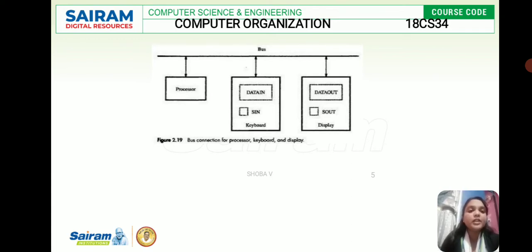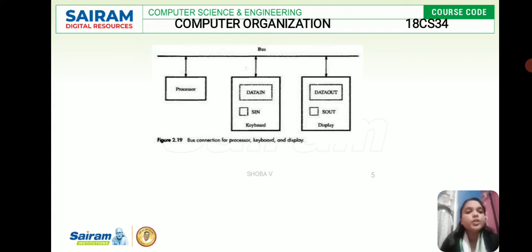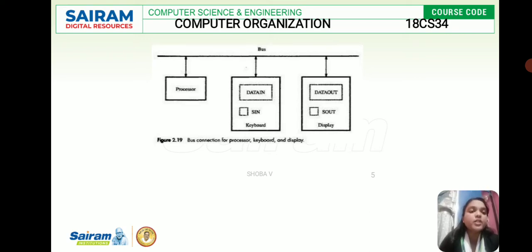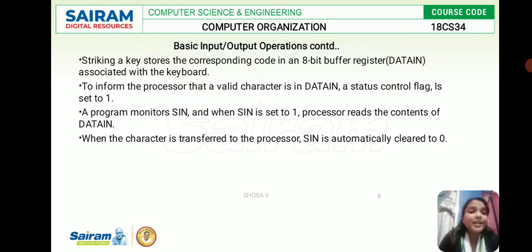Not only one letter — millions of instructions, whatever the user has typed — the same kind of operations are done by the processor at tremendous speed using this buffer register. For competitive exams, they will ask: what is data in, what is data out, what is SIN, and what is SOUT. SIN is the status input flag and SOUT is the status output flag. Striking a key stores the corresponding code in an 8-bit buffer register — that is data in — which is an 8-bit buffer register. Data out is also 8 bits.